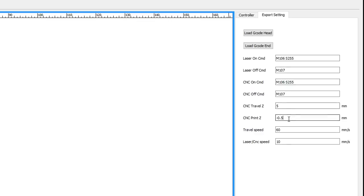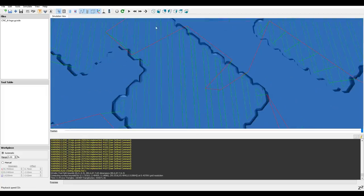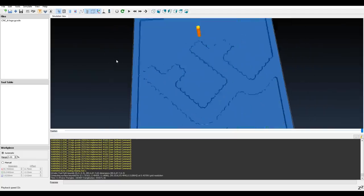The export settings are extra critical here, there's three values that really count. The CNC Travel Z is how much it'll lift up to move to new areas. The CNC Print Z is how far it will cut in. And finally the laser/CNC Speed is the actual feed rate of the cutting action. I once again chose to validate my toolpath in a program called Camotics, which is linked in the description, and the best part is it's free.